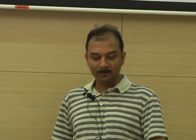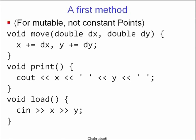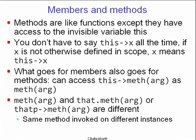You can define methods as part of a class, and each object of that class will have a method of the same name, but different member values. Inside the method you have access to an invisible variable called 'this'. You don't always have to say 'this->x' — if x is not otherwise defined in the current scope, x by default means the x variable's value in the current object. This applies to methods too: calling method2 without a qualifier means invoke method2 on the same object. This is always an implicit scoping mechanism that exists over and beyond local scope inside the function.